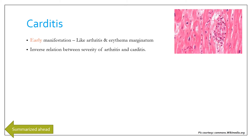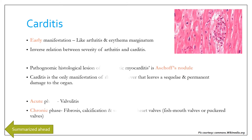There is an inverse relation between the severity of arthritis and carditis. The pathognomonic histological lesion of rheumatic myocarditis is Aschoff nodules, as seen in the picture. Carditis is the only manifestation of rheumatic fever which leads to sequelae and permanent damage to the organ.